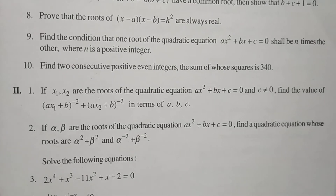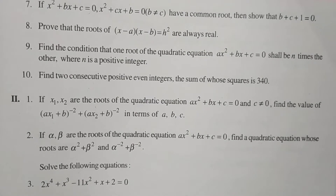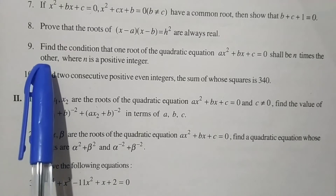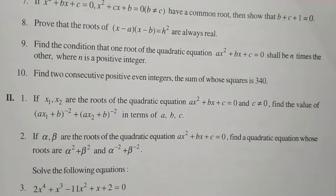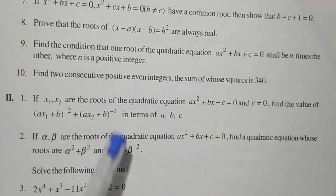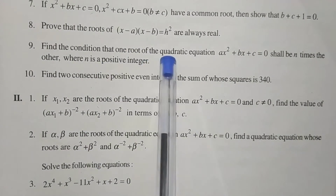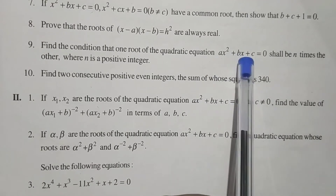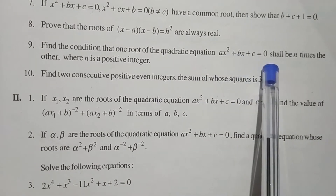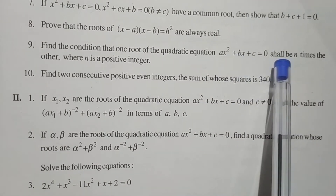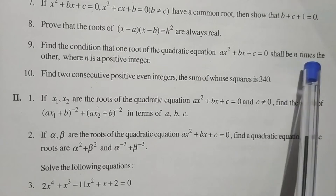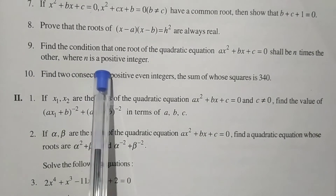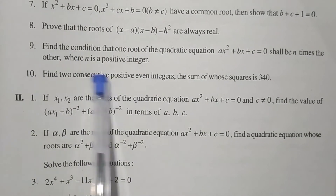In this video we will solve the ninth question: find the condition that one of the roots of the quadratic equation ax² + bx + c = 0 shall be n times the other, where n is a positive integer.